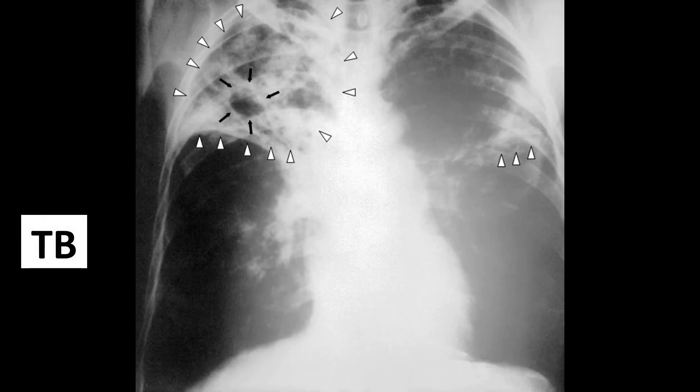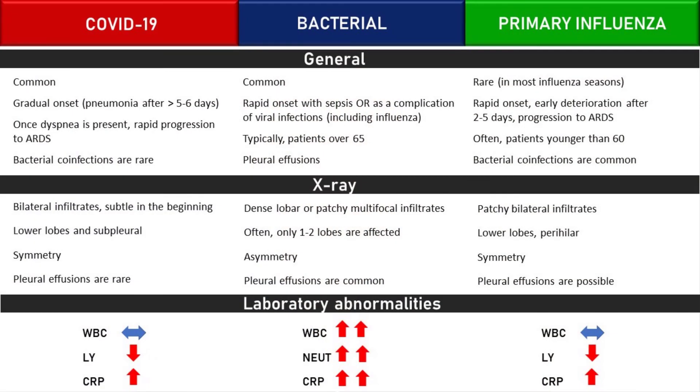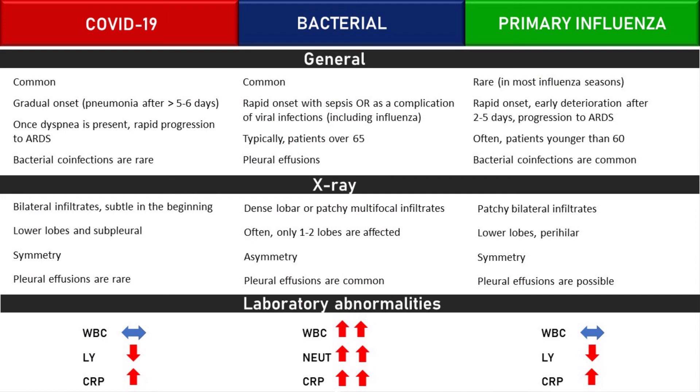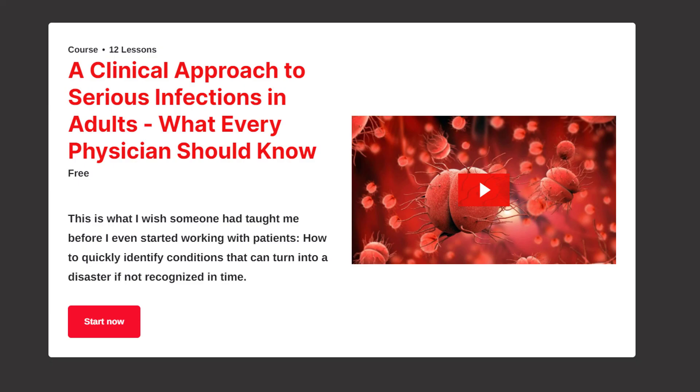In practice, there is bound to be some overlap. Sometimes everything is clear right from the beginning; other times it's really hard to tell what you are dealing with. There are also rare types of pneumonia and non-infectious conditions masquerading as pneumonia. My intention here was to clearly illustrate the main differences between the most common and most dangerous types of pneumonia that you will see over and over again. This ability to recognize serious infections as early as possible is most important in practice, and this is precisely what I teach in my free online course.